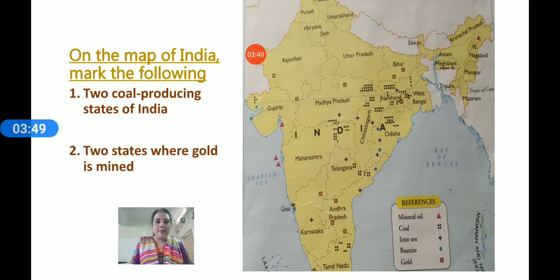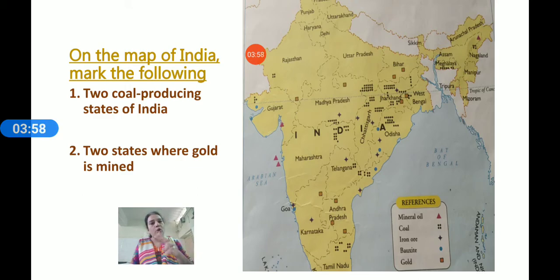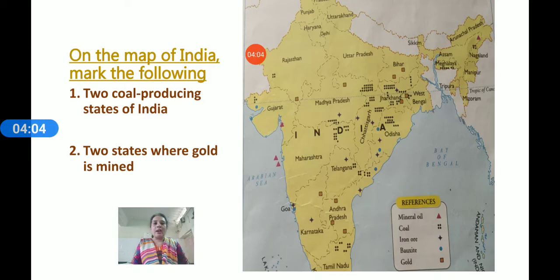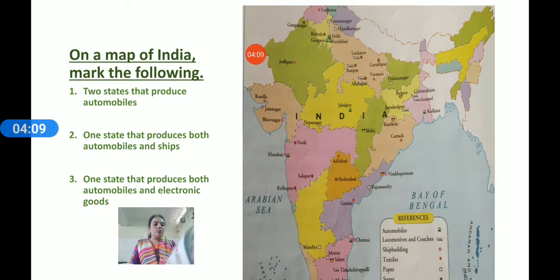So you have to mark two states where coal is produced and two states where gold is mined. The symbols are already given to you — you just mark them in two states each, write the name in gold or coal, and your first map will be complete. Now, the second map is chapter number 14, on page number 130.